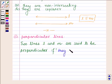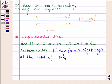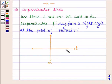they form a right angle at the point of intersection. This shows two lines L and M intersecting at right angles, so we can say that L is perpendicular on M or M is perpendicular on L.